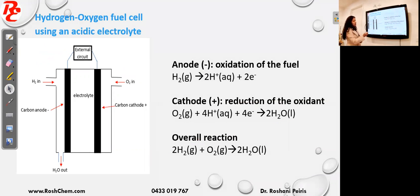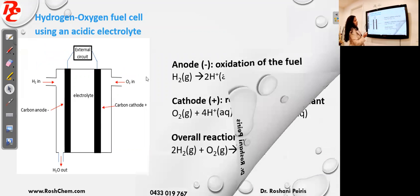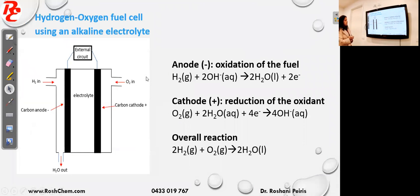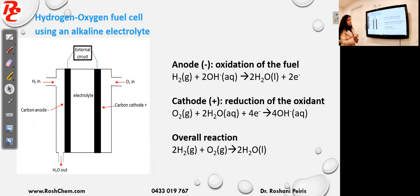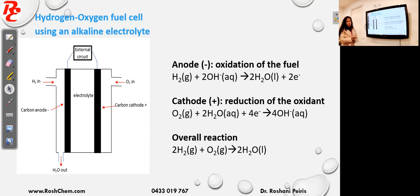Now we will see the same fuel cell under alkaline conditions. It is the same fuel cell with hydrogen and oxygen, but the electrolyte is an alkali, which has OH⁻. The same theory applies: hydrogen gas undergoes oxidation at the anode, and oxygen gas undergoes reduction at the cathode. But the equations are different now.